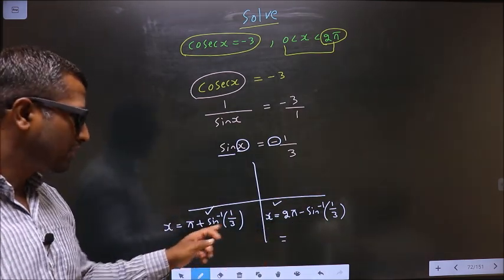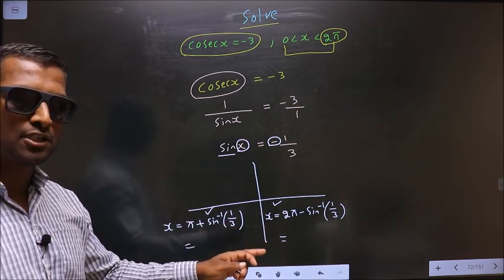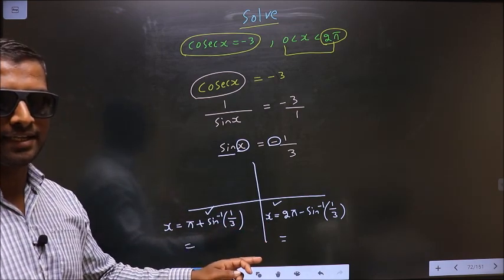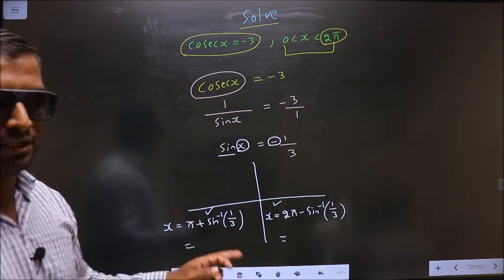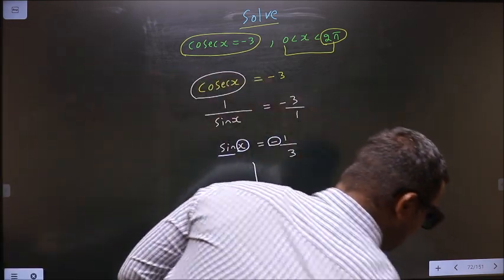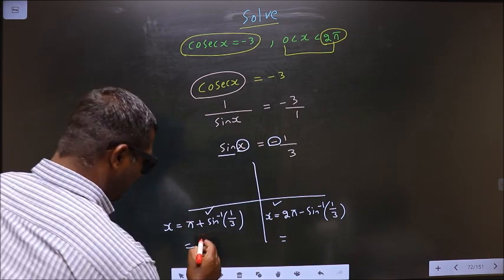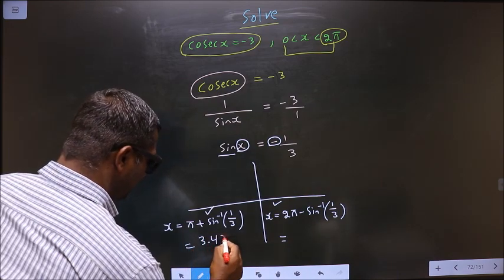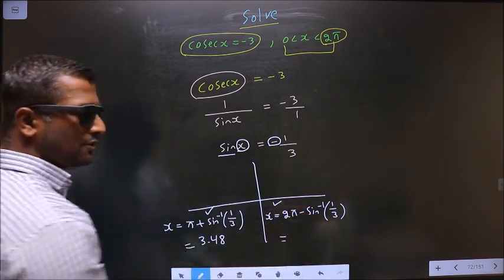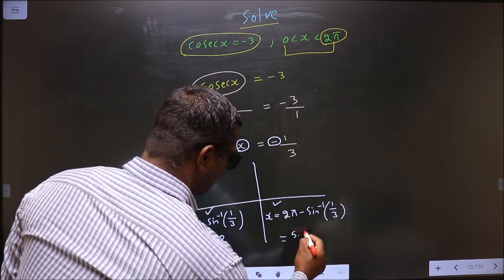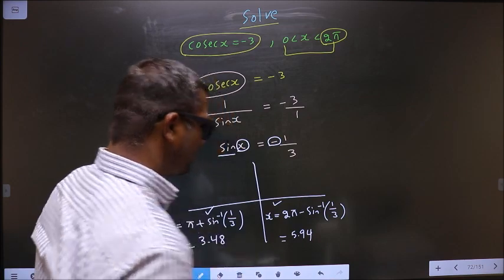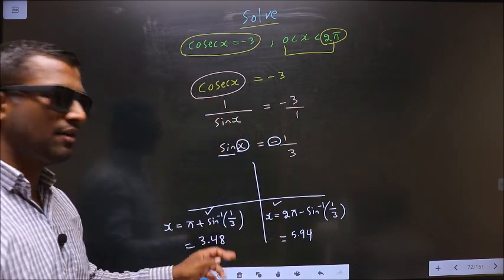Now before you calculate this, make sure your calculator is in radian mode. Now put this in the calculator. You should get 3.48. Put this in the calculator. You should get 5.94. These are our answers.